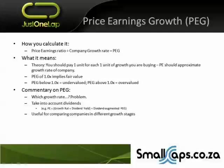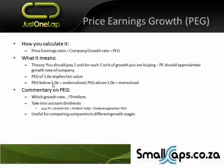Instantly you can see there's a qualitative aspect as well. The price earnings growth rate is built around the theory that you should pay one unit for each unit of growth you are buying — the price earnings should approximate the growth rate of the company. A PEG of one implies fair value. A PEG below one implies undervalued, and a PEG above one implies overvalued. A PEG under one means you're paying less than one for each single unit of growth you're getting, and likewise over one, you're overpaying for that growth.